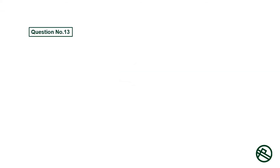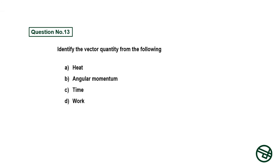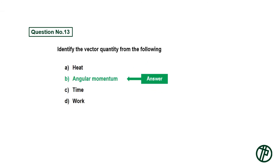Question number thirteen: Identify the vector quantity from the following — option A: heat, option B: angular momentum, option C: time, option D: work. Answer is option B: angular momentum.